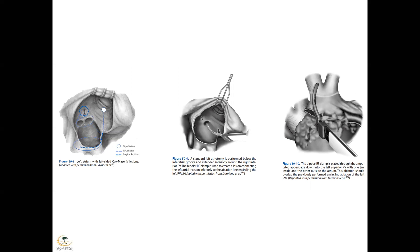After completing pulmonary vein isolation, you amputate the left atrial appendage from outside. Then you apply cryothermia from the left atrial appendage to the left superior pulmonary vein and close the atrial appendage. You finish the box lesion by completing the line from the atriotomy, isolating each segment, applying the jaw to isolate the mitral valve annulus from one point to another, and finally applying cryothermia at the mitral valve annulus.